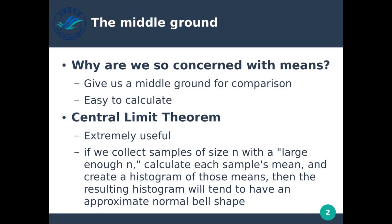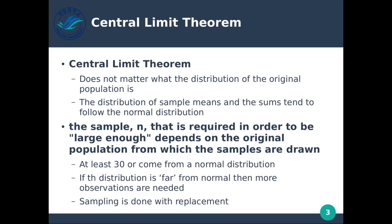Looking at the samples we have and calculating the means, the collection or distribution of those means eventually becomes normal itself. The central limit theorem states it does not matter what the distribution of the original population is, because we're looking at the means of the samples we collect. Any distribution that the sample set has will be converted into a normal distribution by taking the mean. The more data points or samples we have, the more like a normal distribution it becomes.